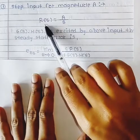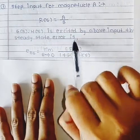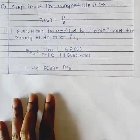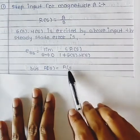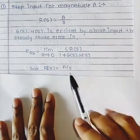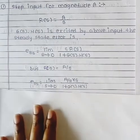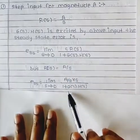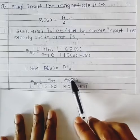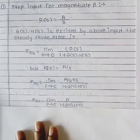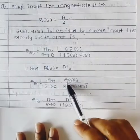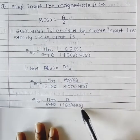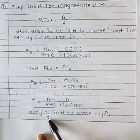Jo bhi step input ki R(S) ke value hogi, woh hum is me put karenge. So R(S) is equal to A/S for step input. After that we put this value in this. So this S and S will be cancelled, the remaining will be A. So A by 1 plus G(S) into H(S).